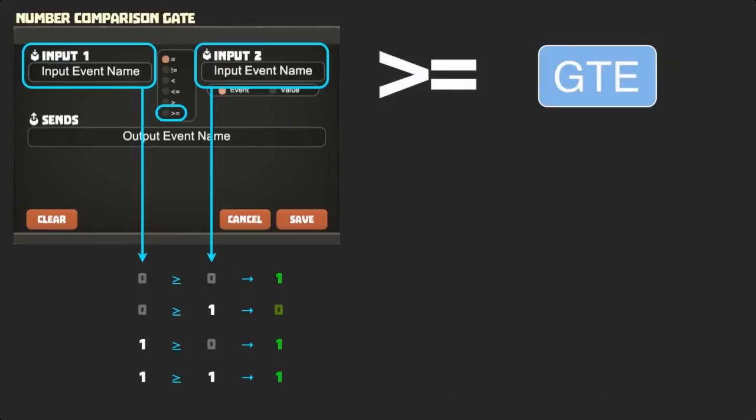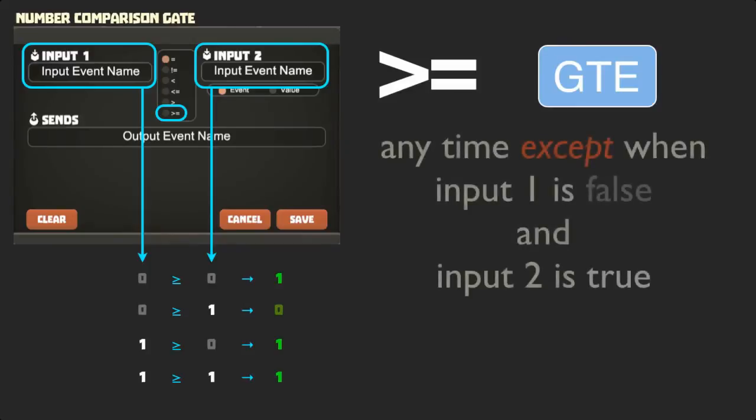Again, we'll frame our behavioral rule as an inverse. The greater than or equal to comparator outputs true any time except when input 1 is false and input 2 is true.